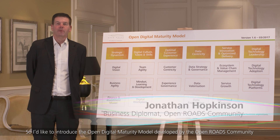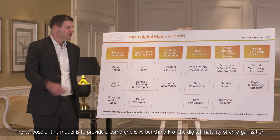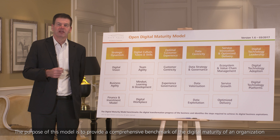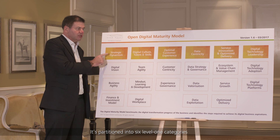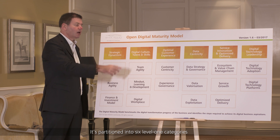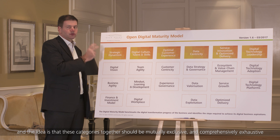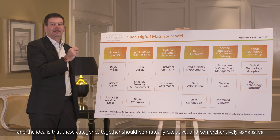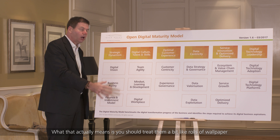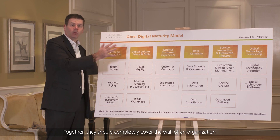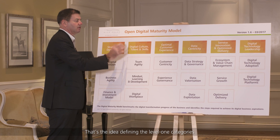I'd like to introduce the Open Digital Maturity Model developed by the Open Roads Community. The purpose of this model is to provide a comprehensive benchmark of the digital maturity of an organization. It's partitioned into six level-one categories, and the idea is that these categories together should be mutually exclusive and comprehensively exhaustive — like rolls of wallpaper that completely cover the wall with no overlaps and no gaps.